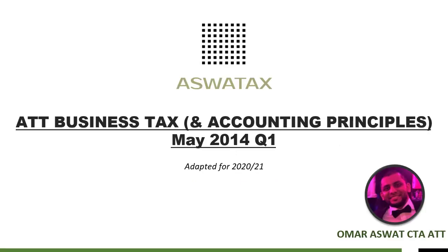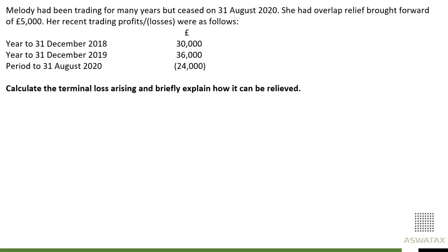ATT Business Tax and Accounting Principles, May 2014 question 1, adapted for the 2021 tax year. My name is Omar Aswad. Melody had been trading for many years but ceased on 31st August 2020 — so cessation of trade 31st August 2020. In the 2021 tax year she had overlap relief brought forward of £5,000, so we'll have to look at and think about that.